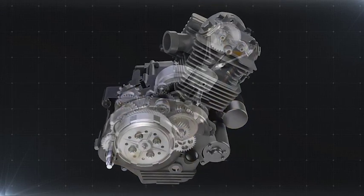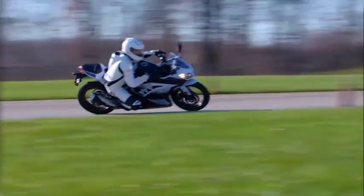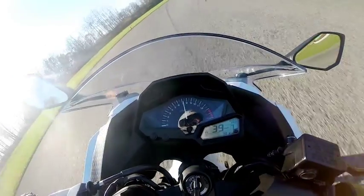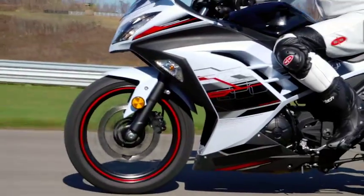With its engine, clutch and gearbox all sharing a single housing, the four-stroke motorcycle truly represents a groundbreaking feat in design, achieving two important goals of saving both weight and space.